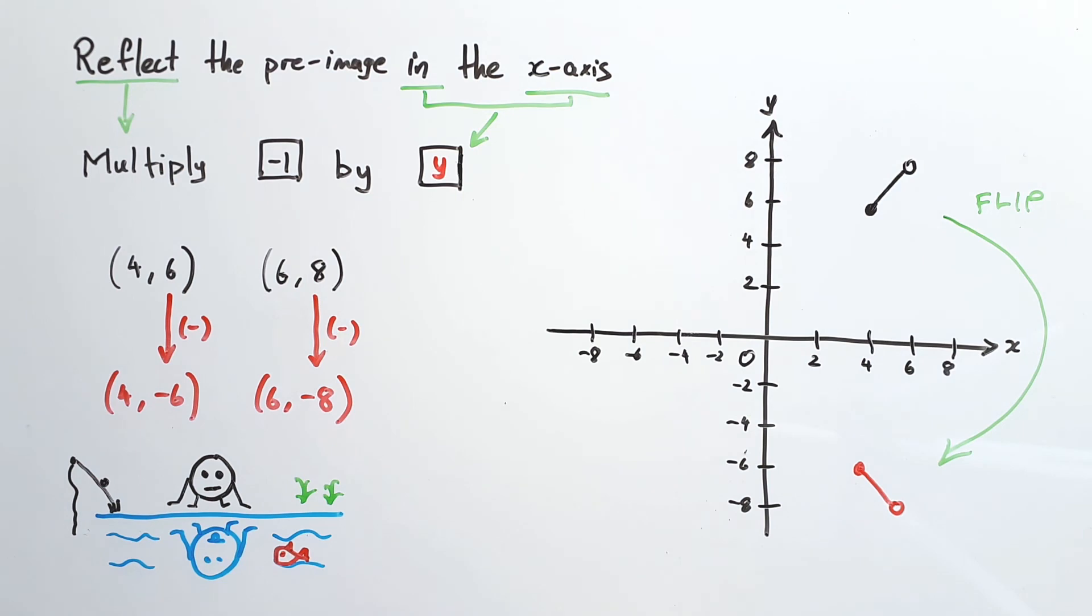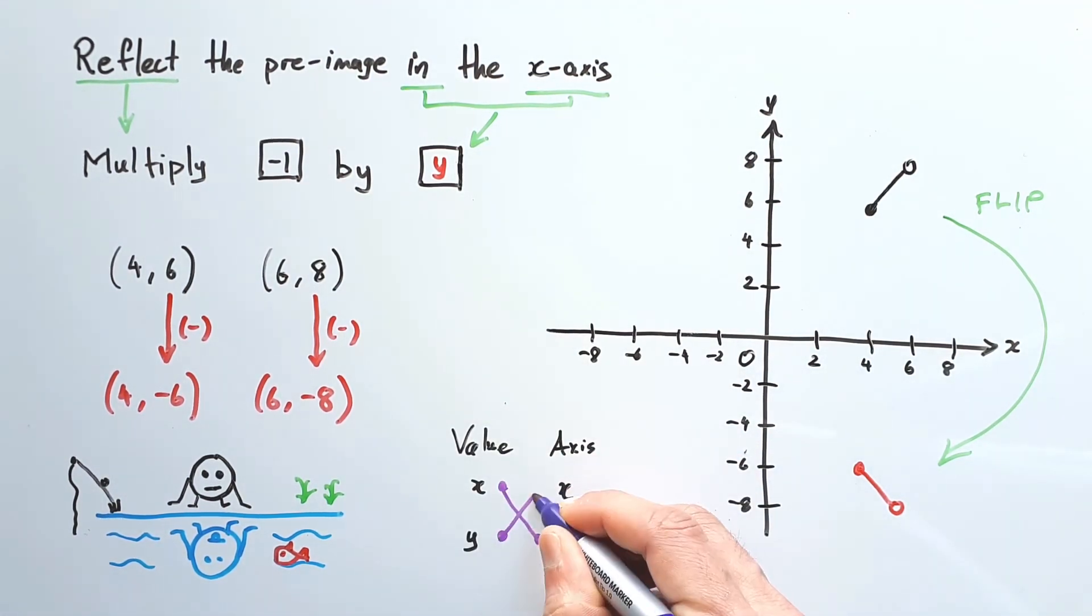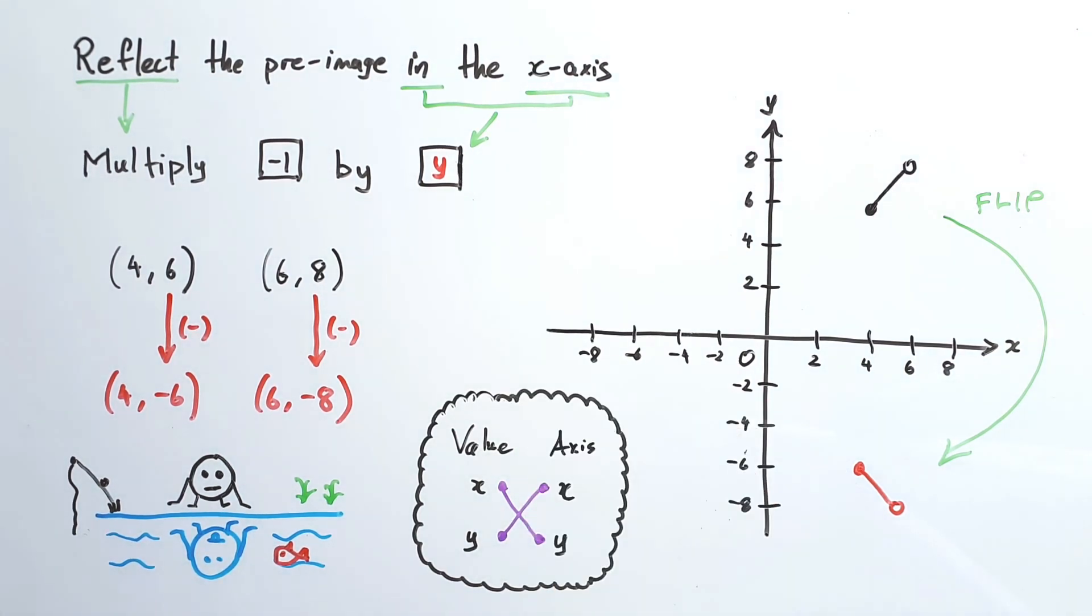So very much like dilations, whichever axis they refer to, we multiply the opposite variable. And while there are arguably better ways to phrase transformations, it seems most common to do it this way in VCE methods. And because of this, dilations and reflections always refer to the opposite variable.